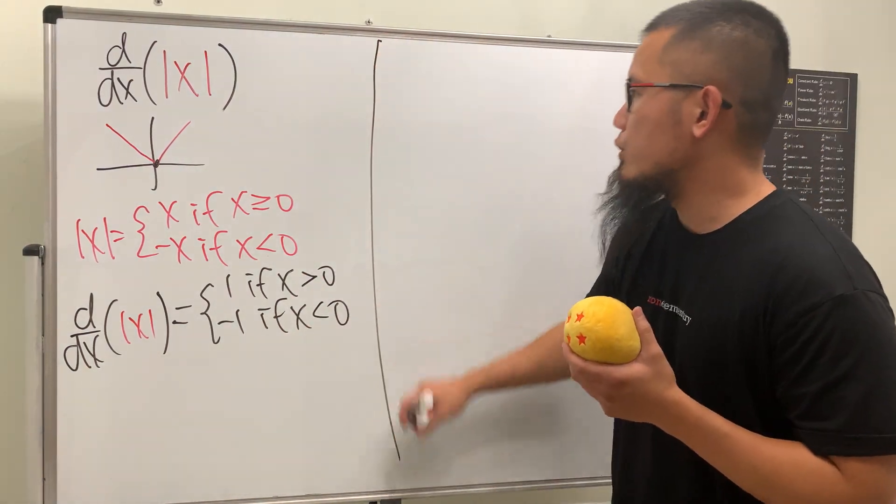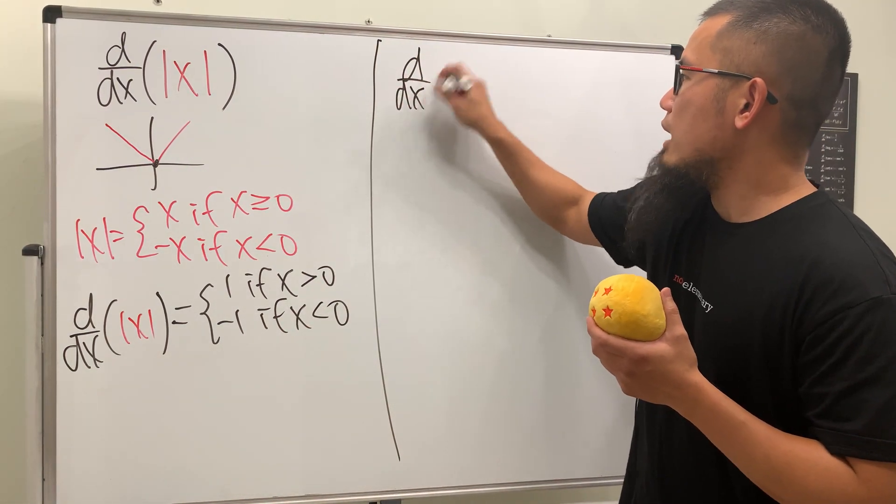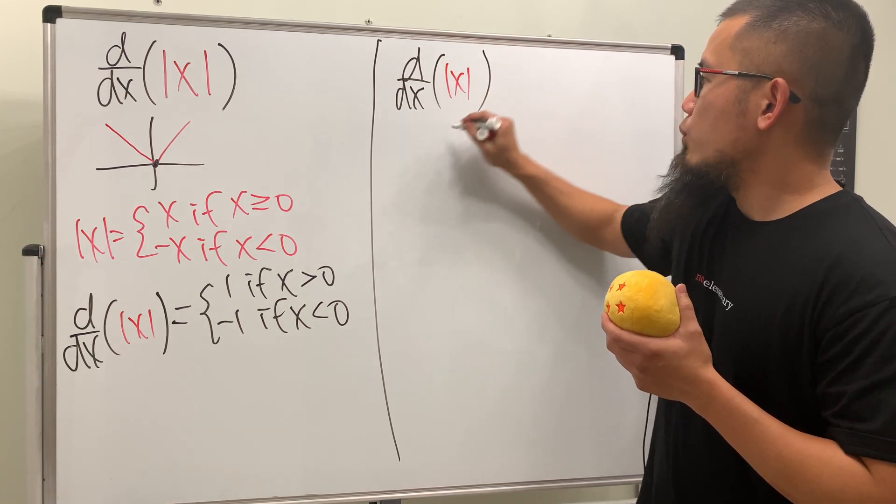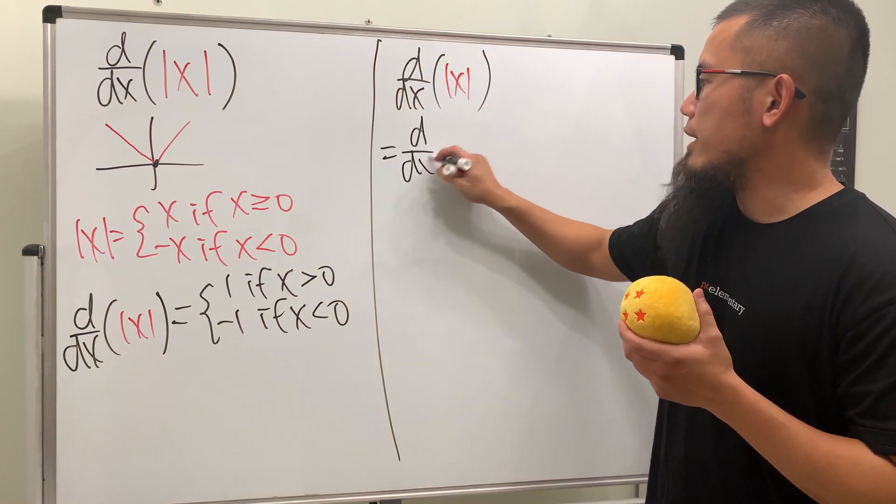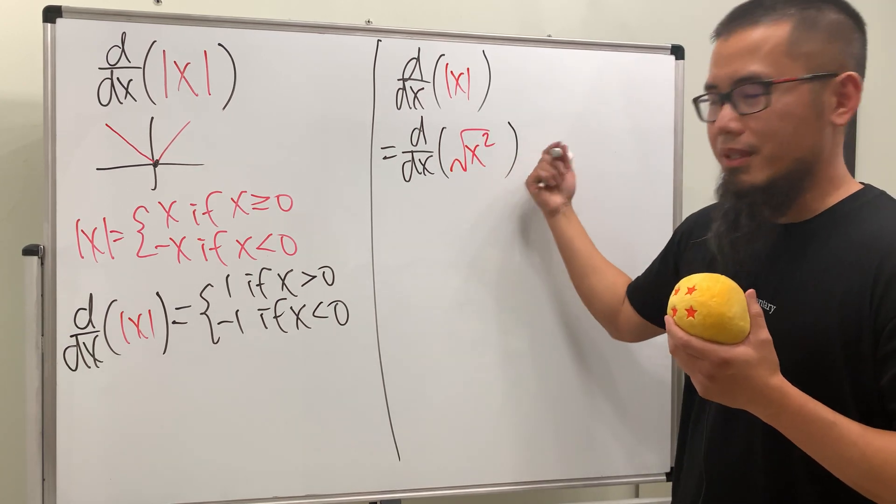Let me show you another way to differentiate absolute value of x. This is the same as differentiating square root of x squared, which is going to be cool because now we can just do the usual way.